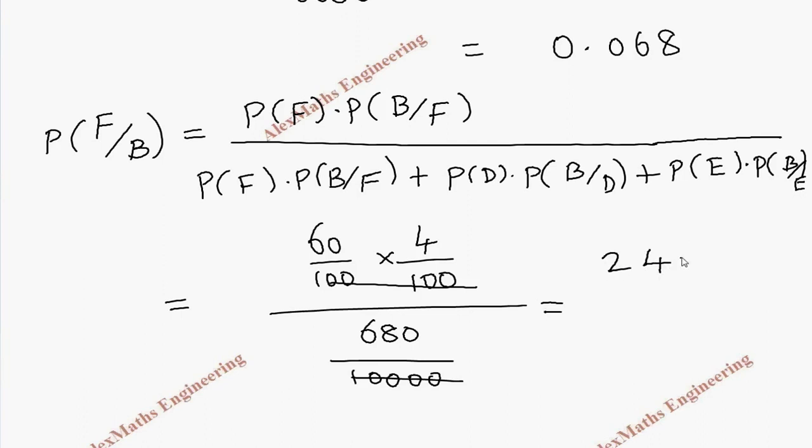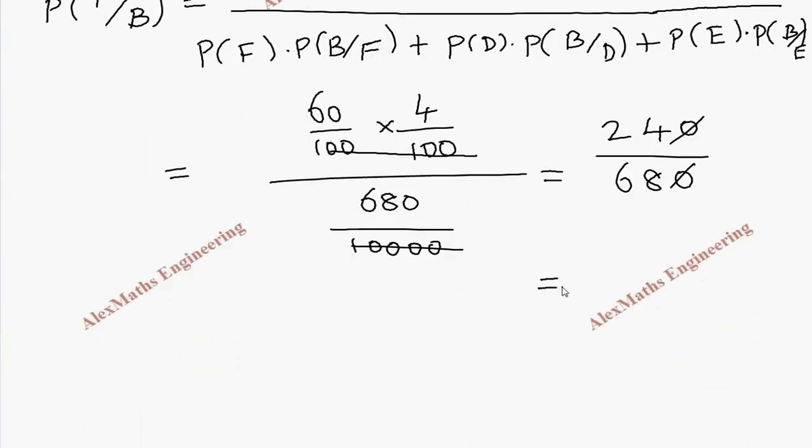So we can directly write the value since we have already calculated. So 680 by 10,000. Now these four zeros and these four zeros we can cancel. After this, this is 240 by 680. We can cancel this and the remaining term 24 by 68, you can cancel the 4 table, which is 6 times and this is 17 times. So totally this probability is 6 by 17. If you divide further it is 0.3529.